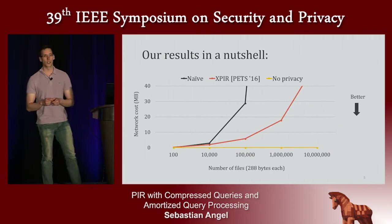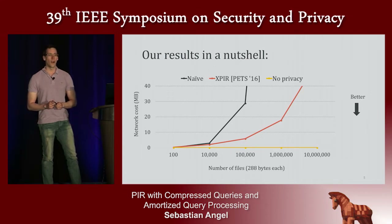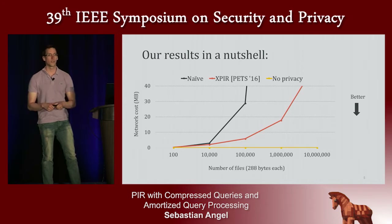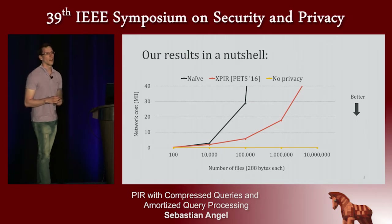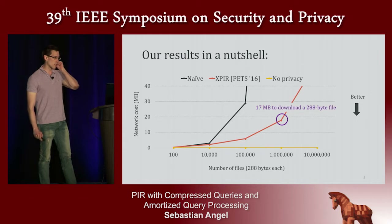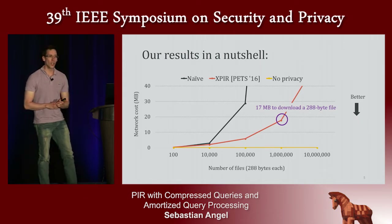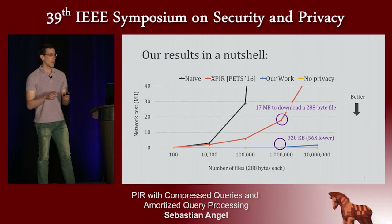To give you our results in a nutshell: the y-axis is the amount of communication required between the client and the server to fetch a single file from a database, and the x-axis is the size of the database. The black line is downloading the entire database; the yellow line is non-private retrieval. The orange line is XPIR, the state-of-the-art computational PIR library. To download a 288-byte file using XPIR costs 17 megabytes — that's 60,000 times more costly than the non-private version. Our work improves this by an order of magnitude.